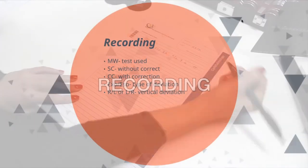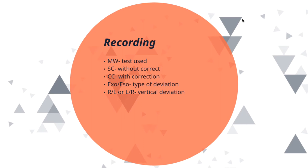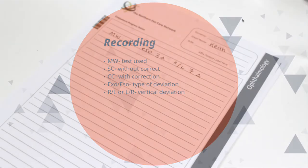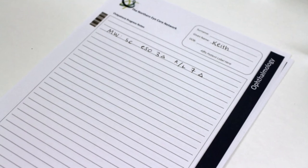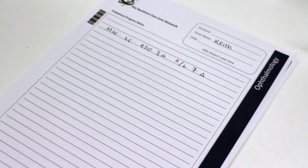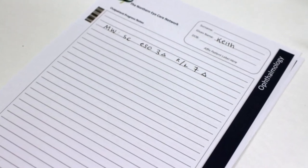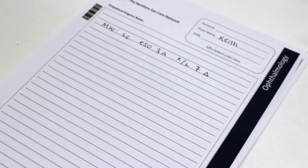Now for recording: MW indicates the test utilised, which in this case is the Maddox wing. SC or CC indicates whether the patient was wearing correction — SC meaning without correction and CC meaning with correction. EXO or ESO indicates the type of horizontal deviation. Right on left or left on right indicates the vertical deviation. Any torsion found is also recorded — remembering that torsion is always measured in degrees. Back to Keith's case: the Maddox wing results show he has an eso deviation measuring at three prism diopters and a right on left — also known as a right hyper deviation — measuring at seven prism diopters. The Maddox wing showed zero degrees of torsion.